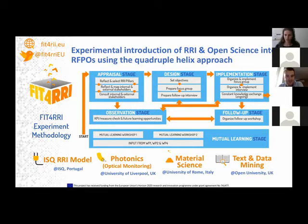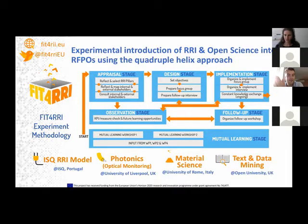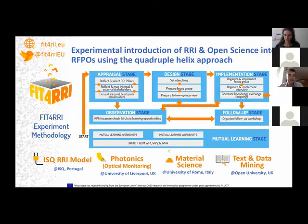Then we had the implementation stage — you will see more examples from the next two presentations. Most importantly, we had a very detailed and unified measurement and monitoring of the experiments. We devised a detailed list of indicators to assess to what extent RRI and open science was embedded in organizational streams, and to what extent this triggered institutional change and policy changes, ensuring proper co-creation with external quadruple helix stakeholders.